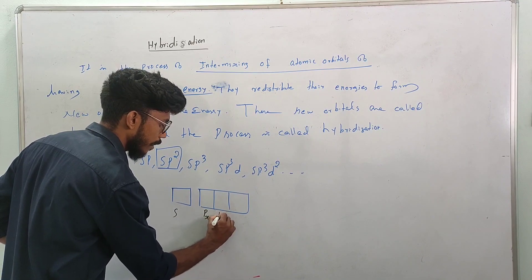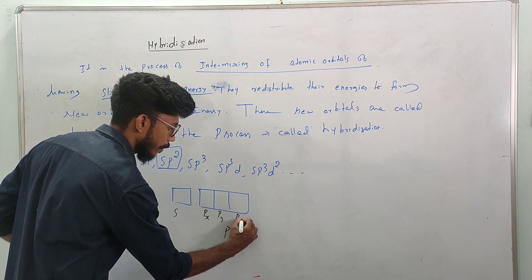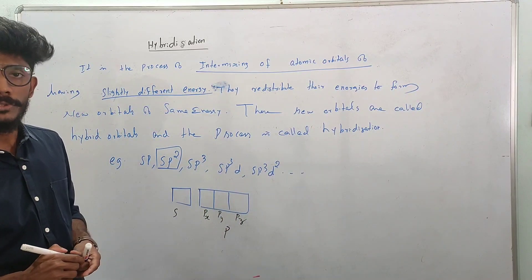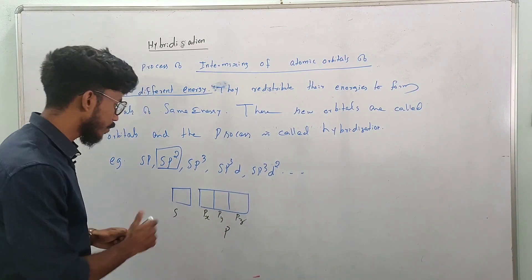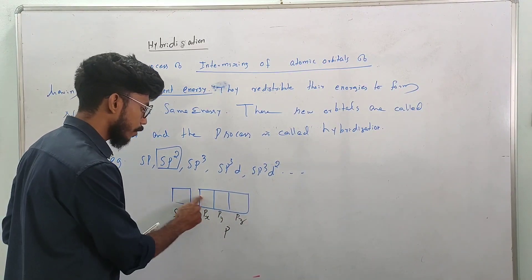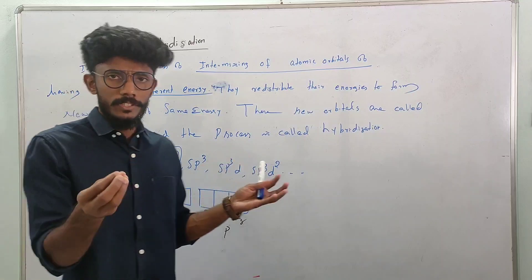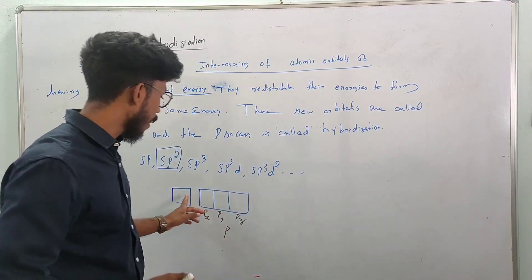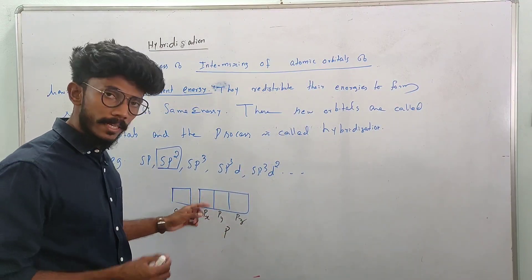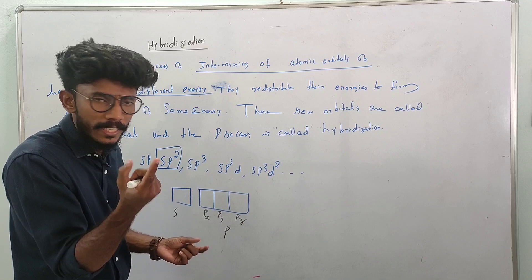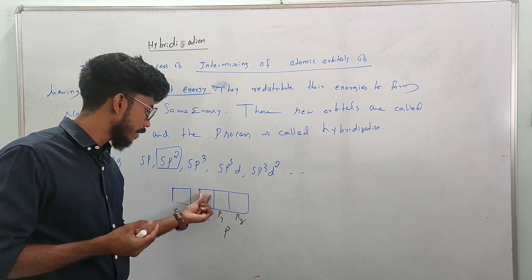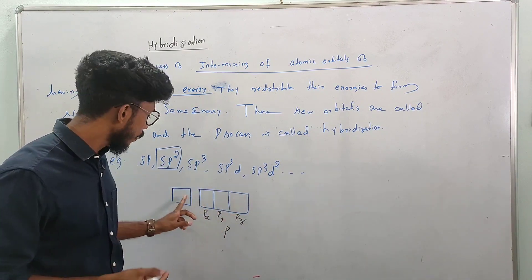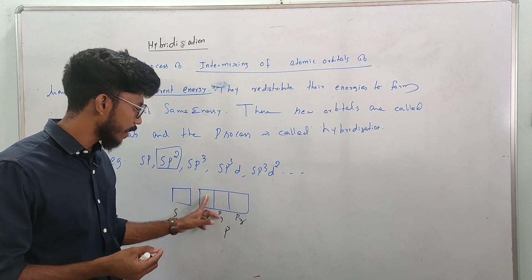There is the px orbital, py orbital, and pz orbital — that is the p in moon orbital. The energy of s is very different from the p orbital — almost the same energy, but slightly different.